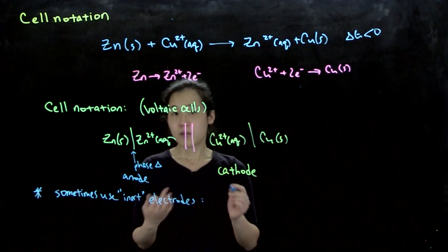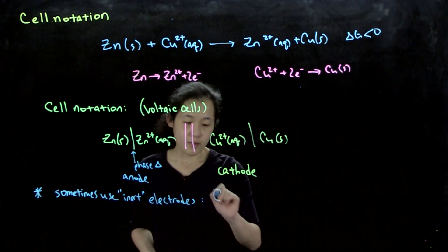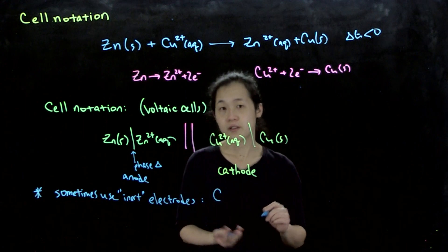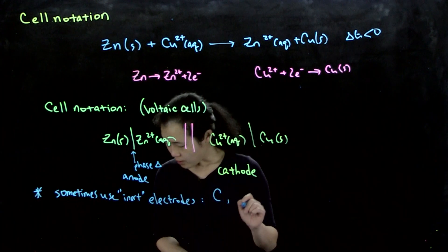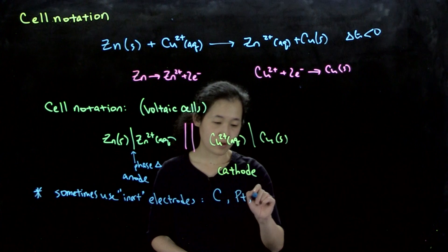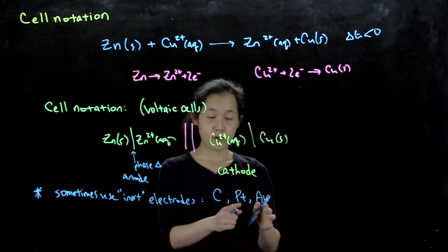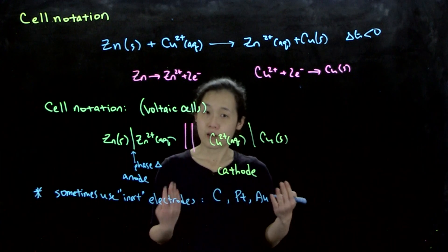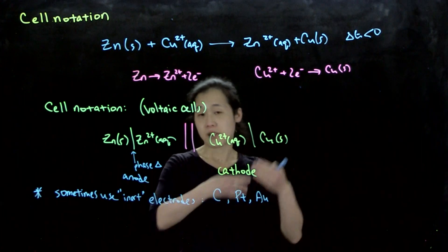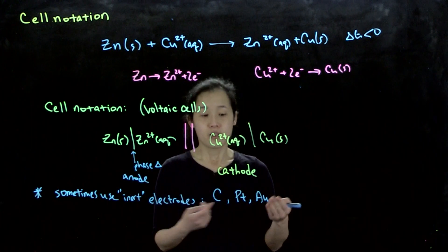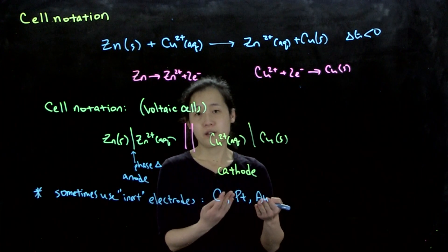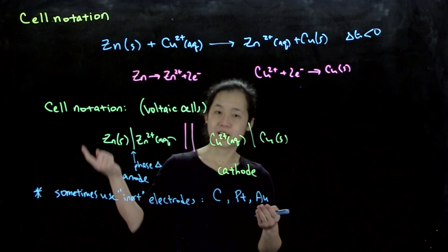Common materials include carbon - carbon is conductive, like glassy carbon. We also often use platinum or gold. Platinum and gold are both relatively inert, so they don't participate in the reactions we want to do. They're really good electrode materials because they won't do side reactions.